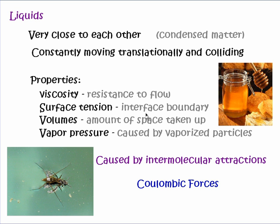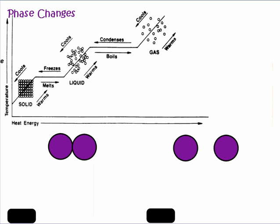We also know that something holds liquids together, which we can tell because it creates surface boundaries — like a bug sitting on top of water. We call this surface tension, and it's caused by intermolecular attractions holding the water molecules together. From these macroscopic observations — that a liquid can move but is still held together tightly — we get a peek into the molecular level.